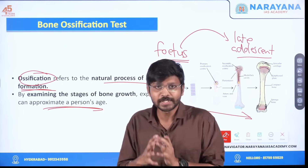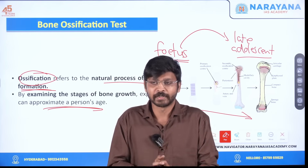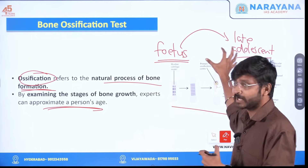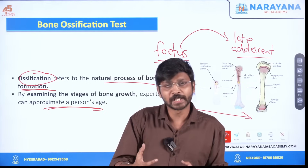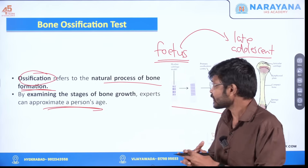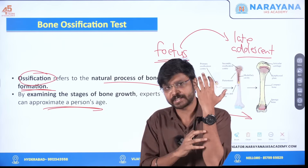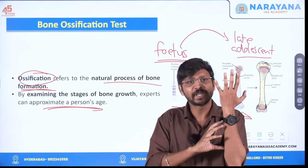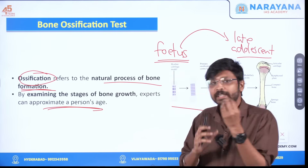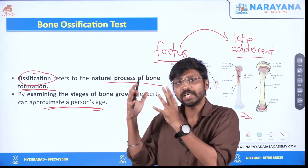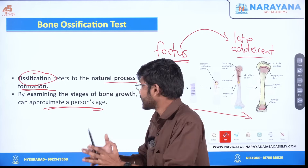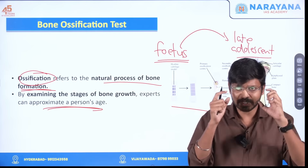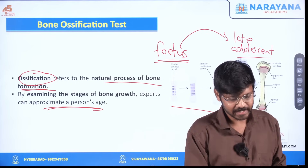Now let me tell you how the bone ossification test is conducted. For example, if you want to determine my age and I am somewhere in between these stages, what we will do is take an x-ray of my hand — it can be the wrist, the hand, or wherever — and compare it with a standard x-ray. At that time, we can determine what my age is. This is how the bone ossification test is conducted.